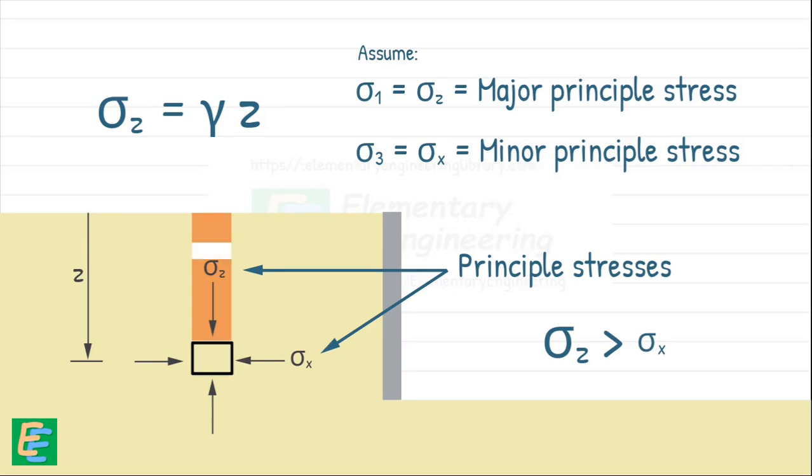In most natural soil conditions, vertical stress sigma z is usually greater than horizontal stress, sigma x. Makes sense, right? The weight of all the soil above is pressing down more than the sideways push from the surrounding soil.